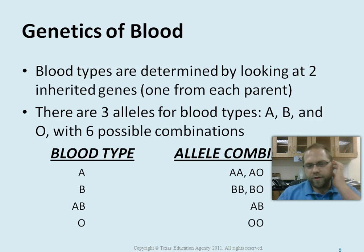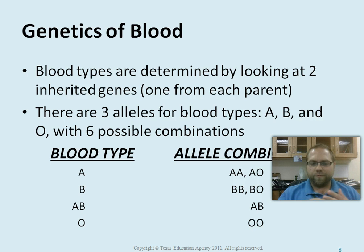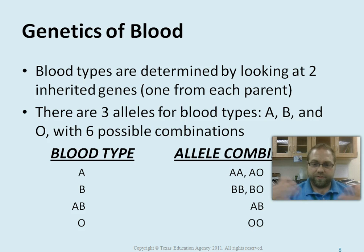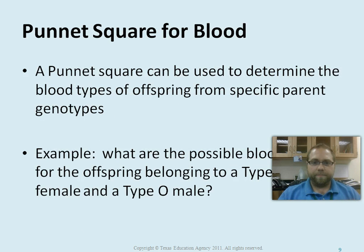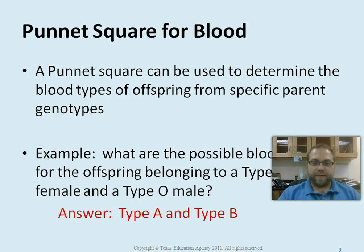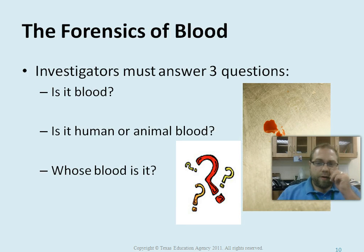For the genetics of blood, we use Punnett squares. A and B are both dominant; O is recessive. You should know how to do this — for example, if given a person with AB blood and a person with O blood, you need to tell me what their allele combinations would be. With an AB female and a type O male, the possible blood types of offspring would be either type A or type B, because A and B are dominant no matter what and O is recessive.